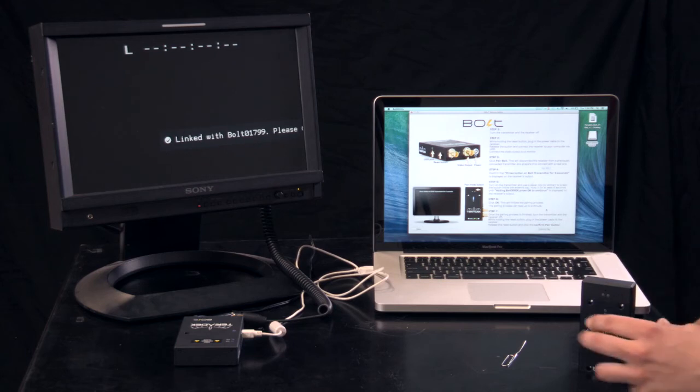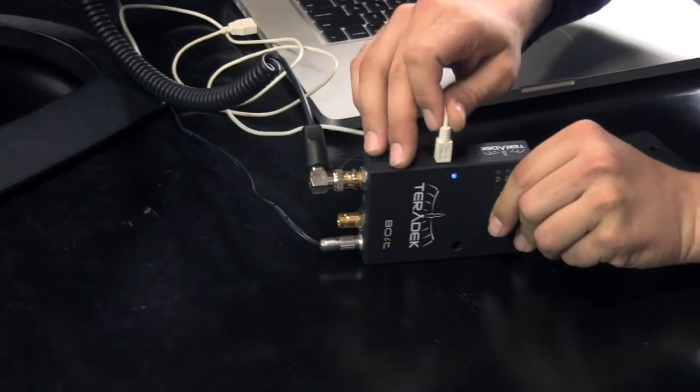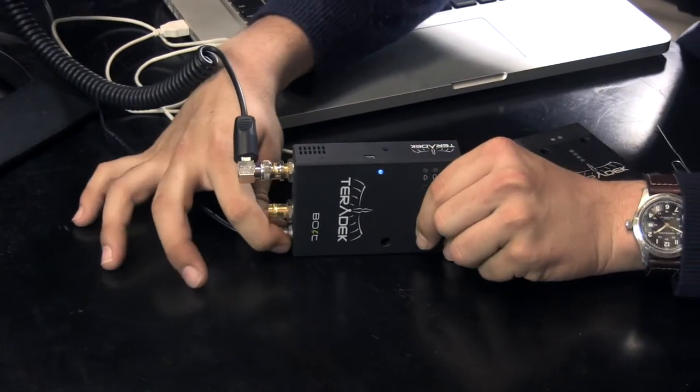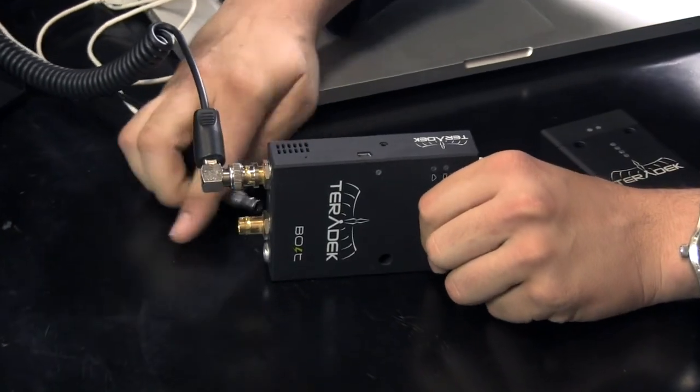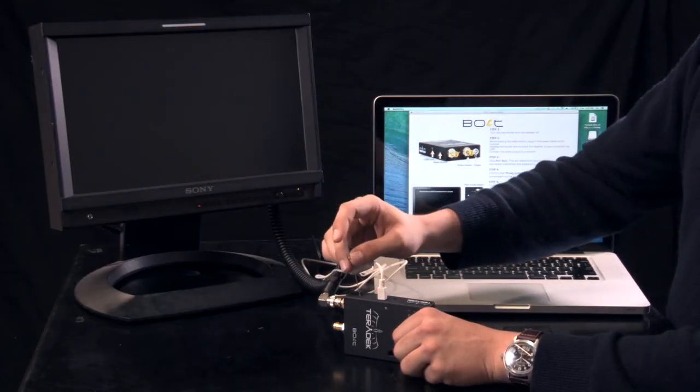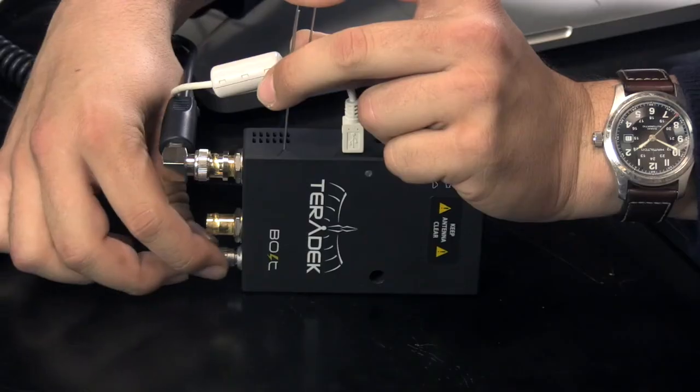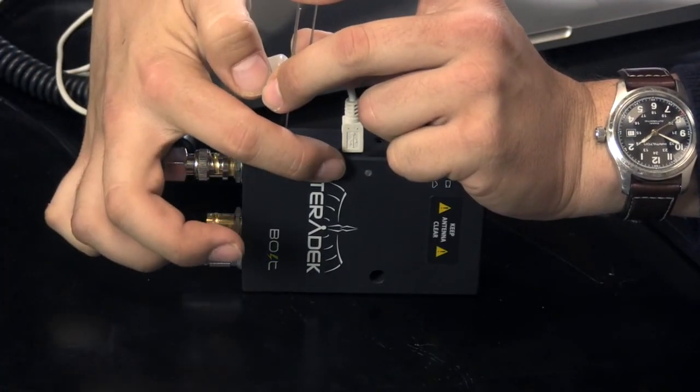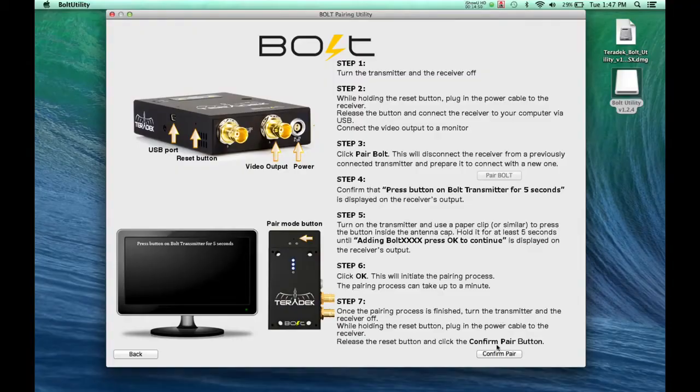Turn off the transmitter. Unplug the USB and power from the receiver. Then, plug the USB back in and hold down the reset button. Now, insert the power. Once again, the LED will blink. Click Confirm Pair.